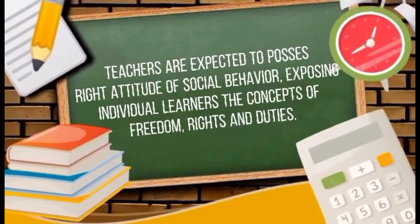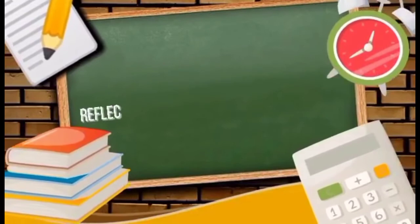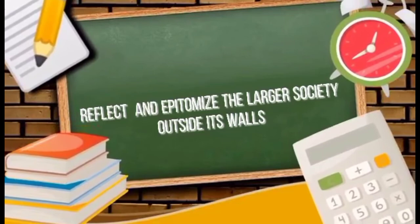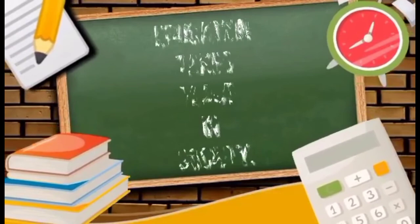The last basis is the school. The school reflects and epitomizes the larger society outside its walls, and also balances, purifies, and simplifies the activities of society in its environment. In conclusion, education takes place in society, where it is essential for the social process. Education must be social in nature and must develop democratic skills and values in students.